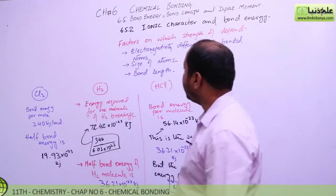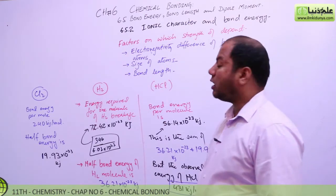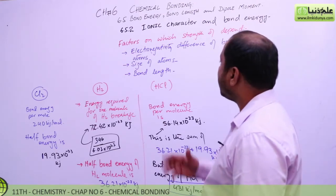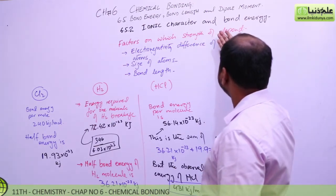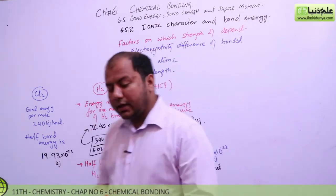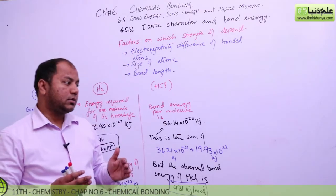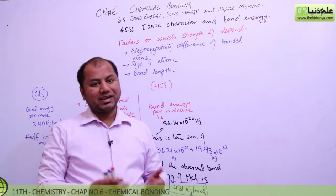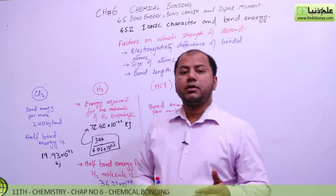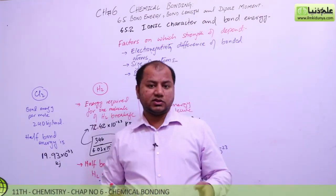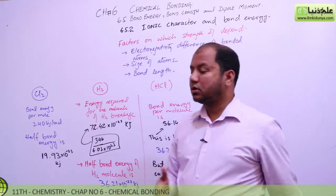Dear students, let us try to understand the bond energy phenomenon. Today we are going to talk about bond energy — how ionic character develops in any bond, and what bond energy calculation is. If we look at the bond between atoms, there are factors that depend on its energy. For example, if you want a very strong bond, which factors create that strength? I have three factors mentioned here, though there are a lot more.